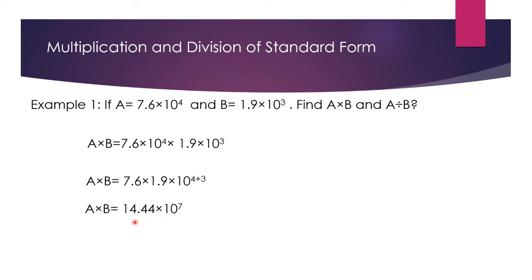Now we will convert this value into standard form. The point moves one digit back, so the value becomes 1.444 multiplied by 10. Since the power already has 7, we add 1 to get 10 to the power 8. So a multiplied by b will be equal to 1.44 multiplied by 10 to the power 8.